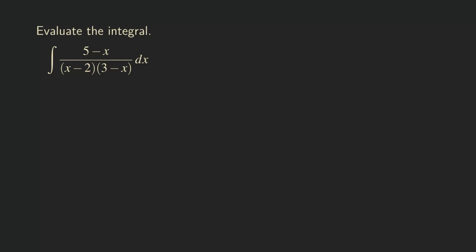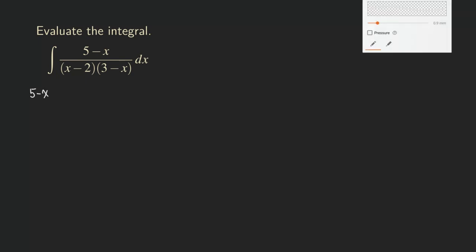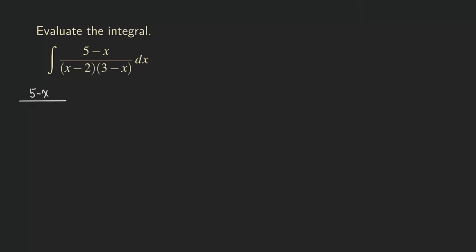So we are going to start by rewriting it as (5 - x) over (x - 2)(3 - x). To decompose this function, we are going to get capital A in the numerator with denominator (x - 2), plus capital B with denominator (3 - x).